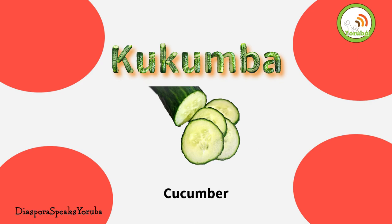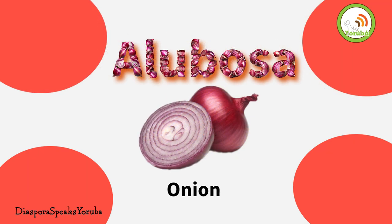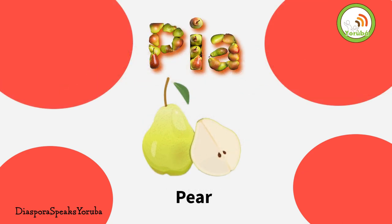Cucumber: Cucumba. Corn: Agbado. Onion: Alubosa. Pear: Pia.